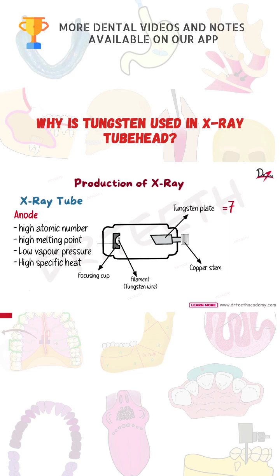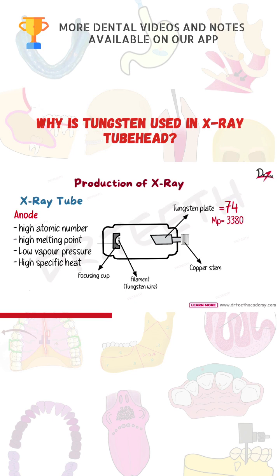Tungsten has a high atomic number of 74, so we have a check mark here. We need a high melting point — tungsten has a melting point of 3380°C, so we have a tick mark here. The metal must not melt itself when the temperature goes high. We need a low vapor pressure so that the metal does not evaporate, and we have a check mark here as well.